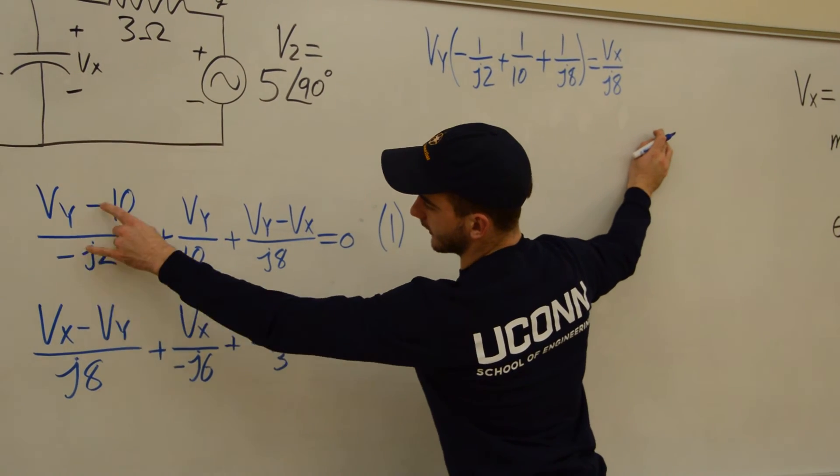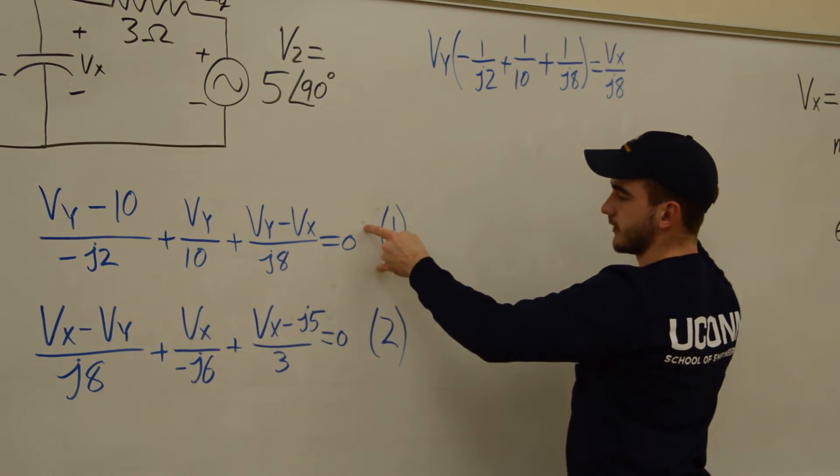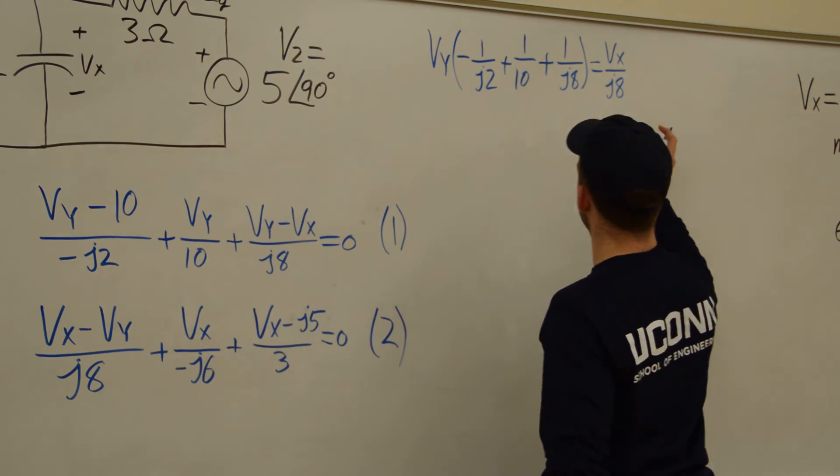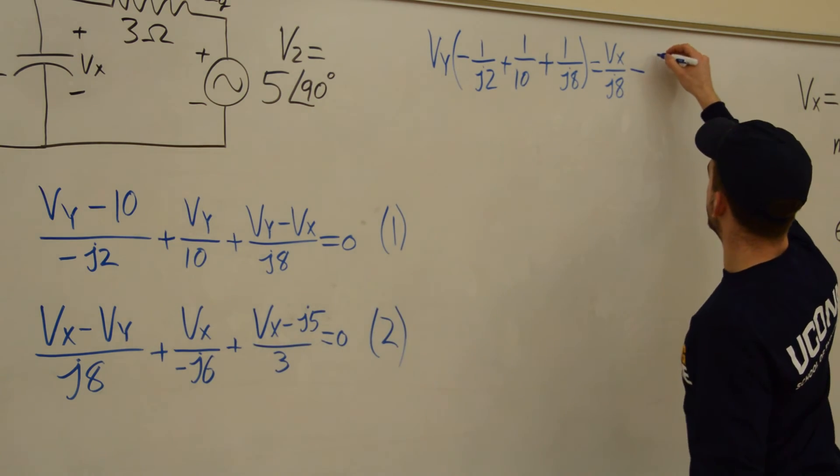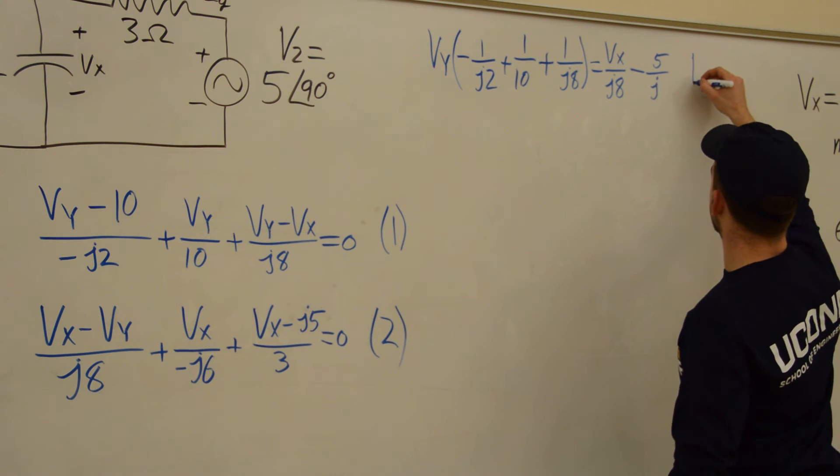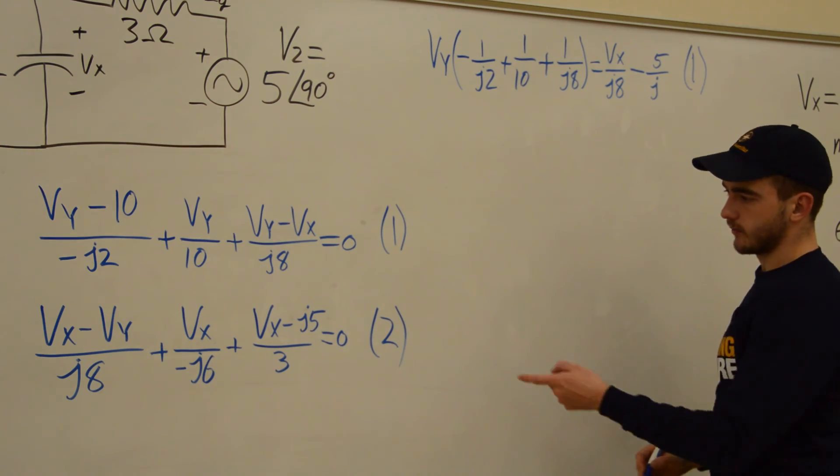And then these negatives cancel. So we're going to have a positive brought to the other side. So we'll have minus 10 over J2, which is minus 5 over J. So that's equation 1, just written in a different form.